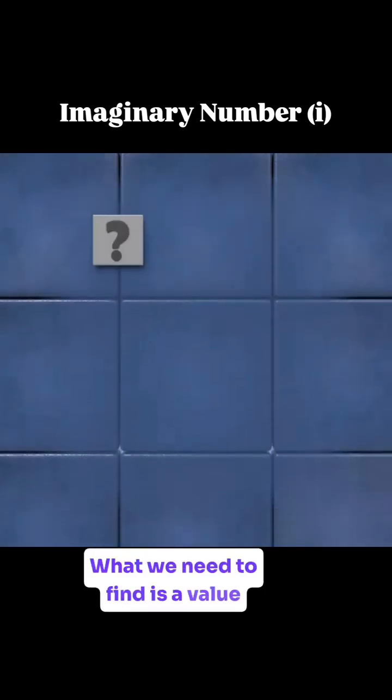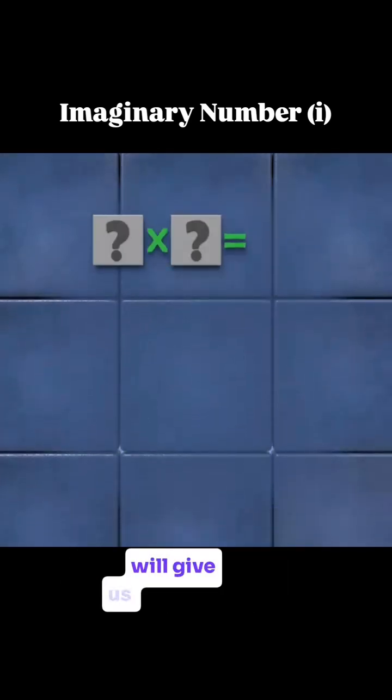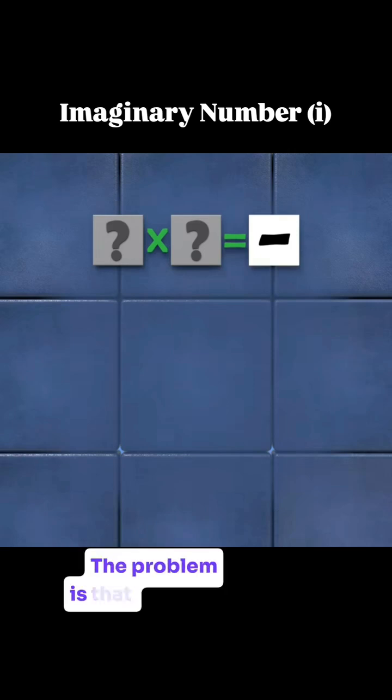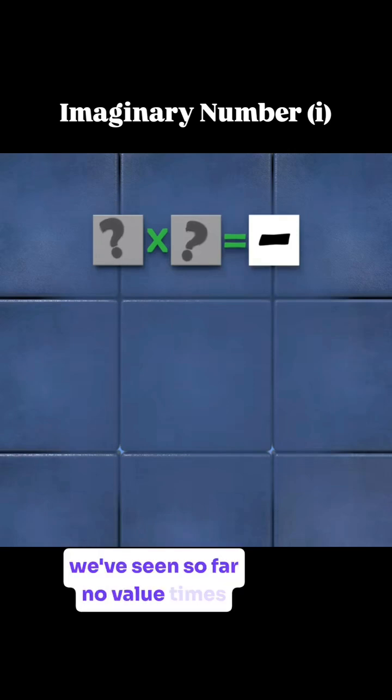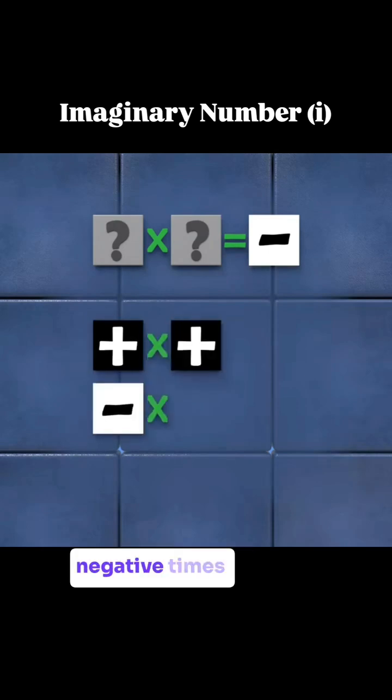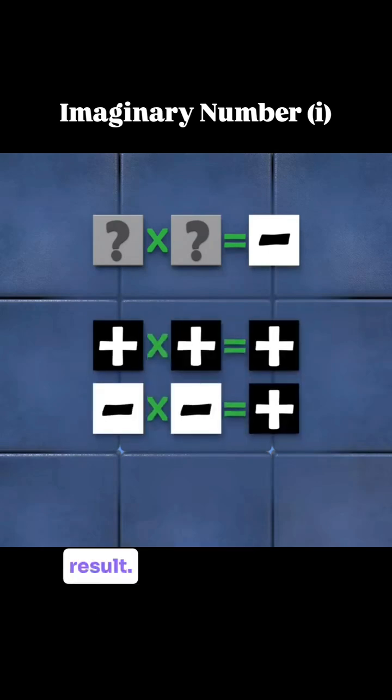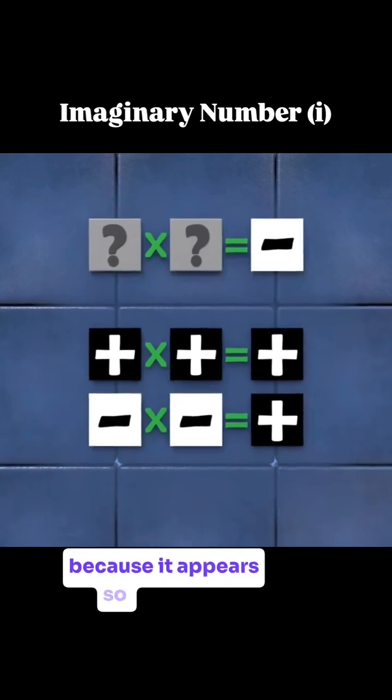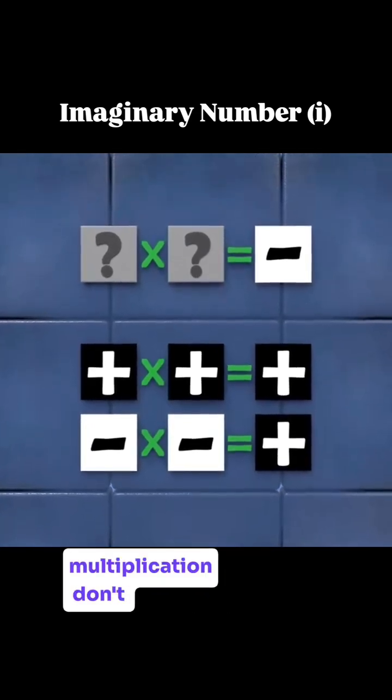What we need to find is a value that, when multiplied by itself, will give us a negative result. The problem is that from what we've seen so far, no value times itself will give a negative result. A positive times a positive, or a negative times a negative will both give a positive result. This can seem frustrating because it appears so basic, but the mechanics of multiplication don't seem to allow it.